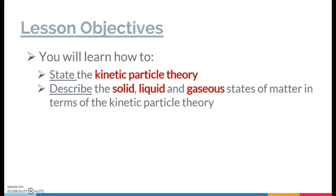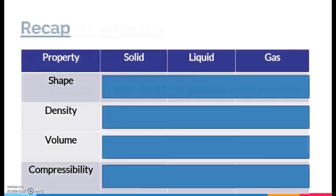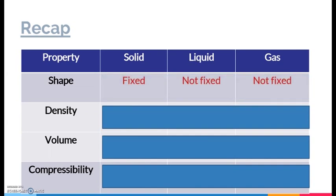Let's do a quick recap on some of the properties of solid, liquid, and gas which you might have learned before. For the shape of the three states of matter, for solid it has a fixed shape. For liquid it doesn't have a fixed shape — it takes up the shape of the container. Likewise for gas, it also takes up the shape of the container.